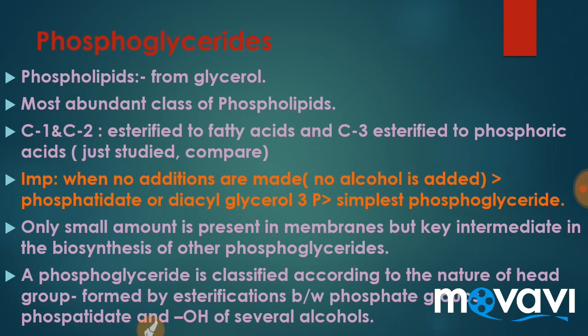Phosphatidates are present in very small amounts but are key intermediates for phosphoglycerides. The phosphate is esterified to one of these alcohols, and each structure is different. Looking at the structures: serine has a carboxyl group, an amine group, and a hydrogen on the branch coming out of the parent carbon, and a hydroxyl group. The second one here is ethanolamine — ethane attached to an amine group. This is the alcohol shown in red color — ethanolamine.